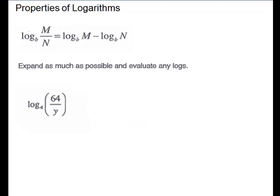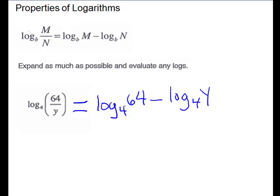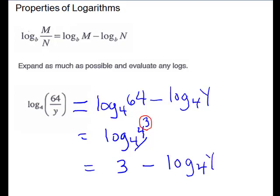Next we have log base 4 of 64 over y. The log of a quotient rewrites as log base 4 of 64 minus log base 4 of y. We can rewrite 64 as 4 to the third, choosing this same base, and this simplifies to just the exponent 3. For the other term, you cannot rewrite y in terms of 4 to a power, so it just comes down as is.